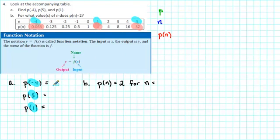So as we write down our answers, what is p(-4)? p(-4) is 0.063. What is p(5)? p(5) is equal to 32. And what is p(1)? p(1) is equal to 2.